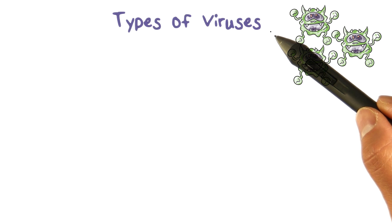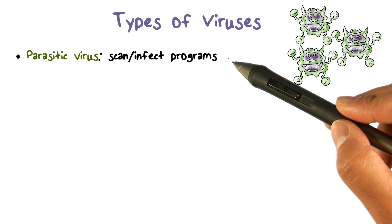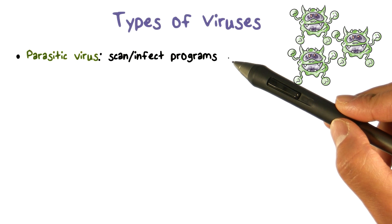Now, let's look at the different types of viruses. The first is the parasitic virus. They typically scan programs on a system, for example on the hard drive, and then infect these programs.